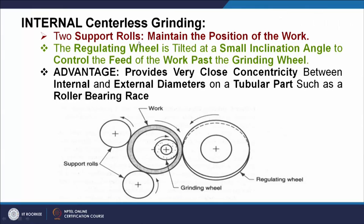The internal centerless grinding process uses two support roles — between one regulating wheel and two support roles the work piece is placed, and the rotation of the regulating wheel governs the rotation of the work piece on the support roles. The grinding wheel is brought in contact with the inside surface of the work piece, and rotation of the grinding wheel removes material from the internal surface. The inclination given to the regulating wheel helps to move the work piece past the grinding wheel so that the entire length of the work piece can be processed. An additional advantage is that internal centerless grinding produces very good concentricity between the internal and external diameters, which is especially useful for roller bearing races.